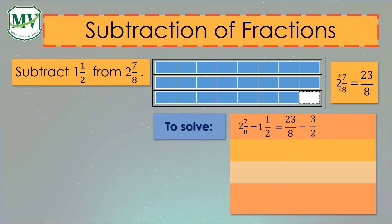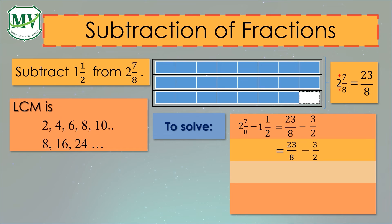Can we subtract them now? No, we cannot since their denominators are not the same. We will find the LCM of 8 and 2. The LCM of 8 and 2 is 8. Then we need to multiply 4 to 3 over 2 to make the denominator 8. So, 3 times 4 equals 12 over 2 times 4 equals 8. The new subtraction sentence will be 23 over 8 minus 12 over 8.